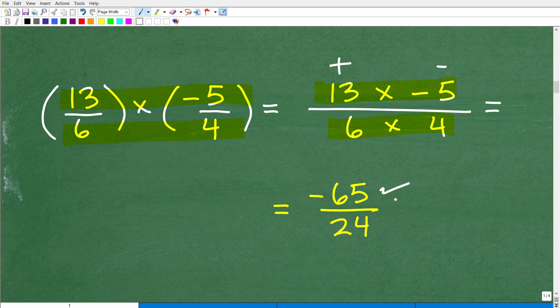And by the way, just as a little technical thing, a lot of students confuse: is negative 65 over 24 equal to negative 65 over 24? Can I write my answer this way? Or what if I had 65 over negative 24?